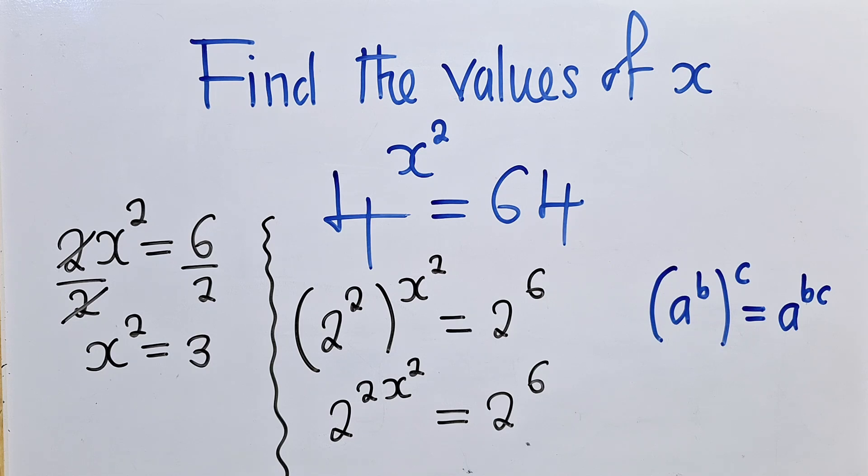So we can now get rid of this power 2 by simply saying x is equal to the positive or negative square root of 3. So this will give us two answers. These are the two solutions of this equation.